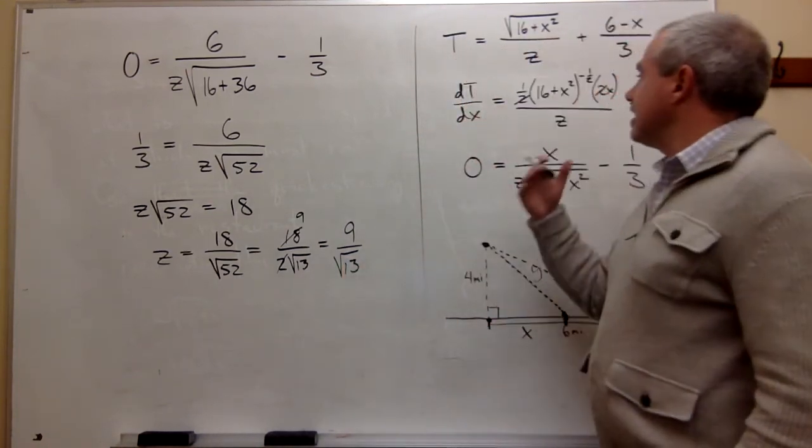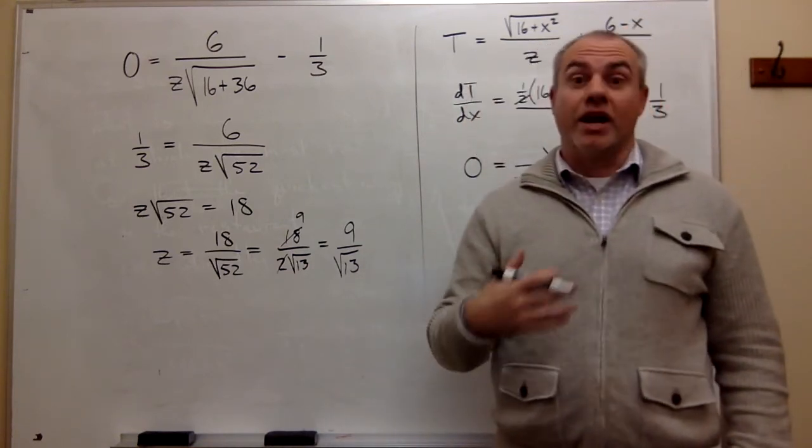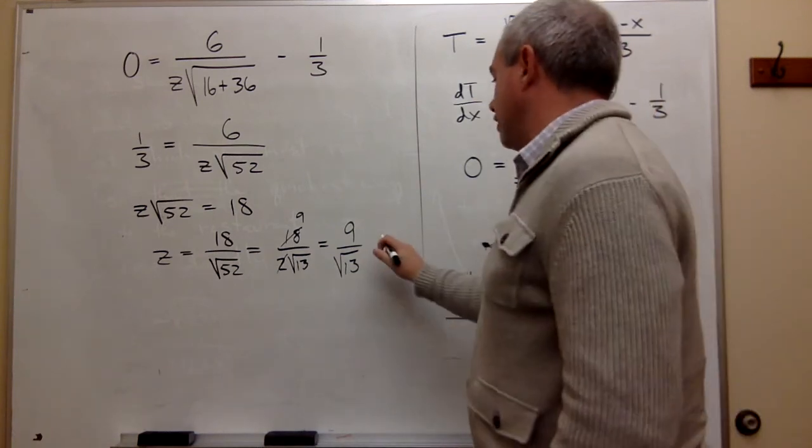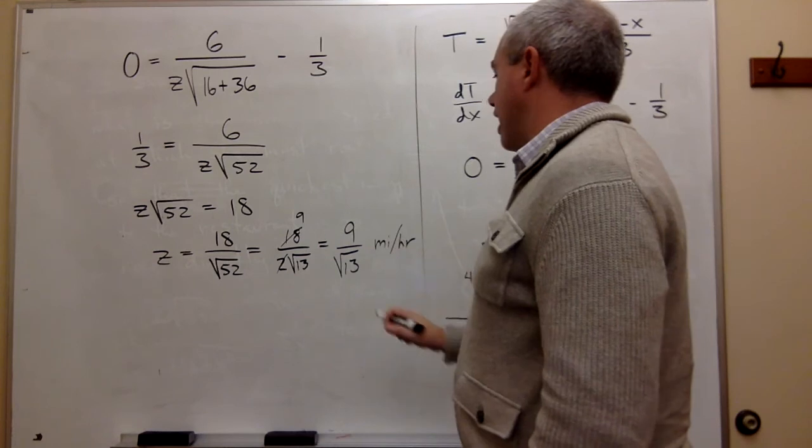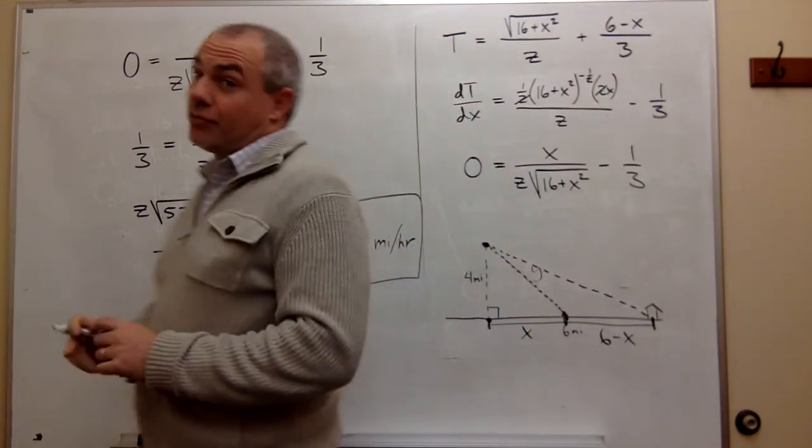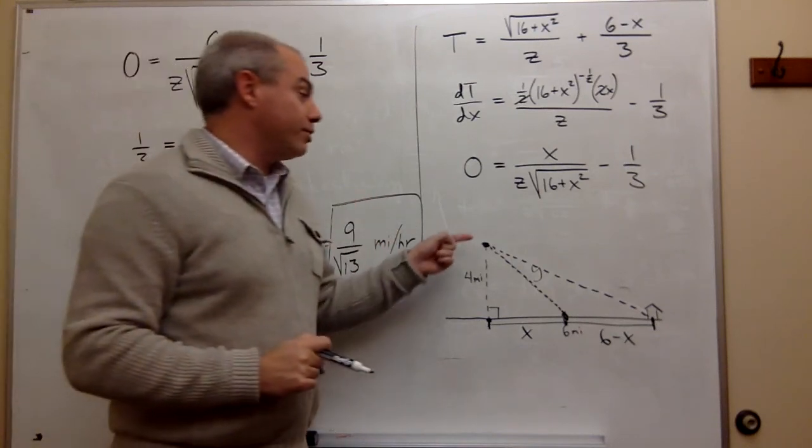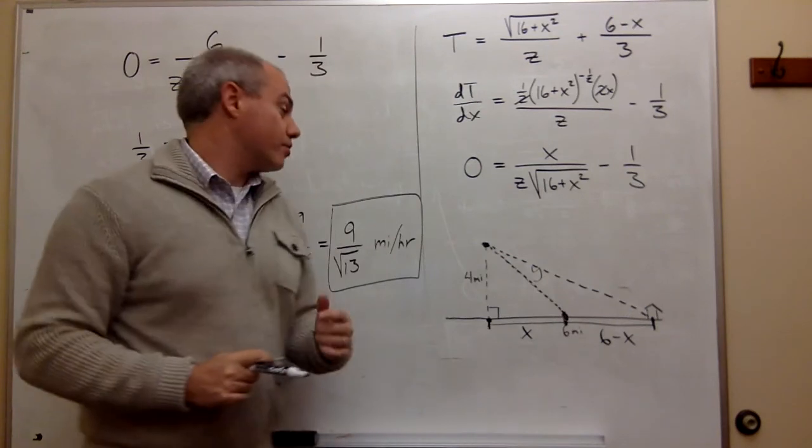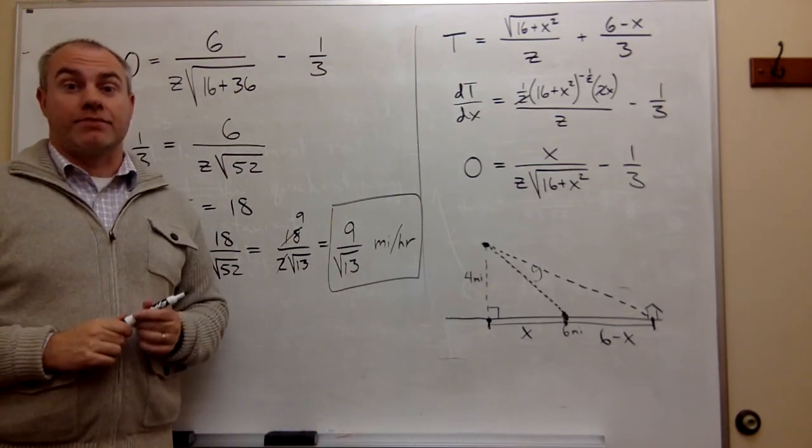And let's remember what z is that we're talking about. Z is a rate, a rate at which we are rowing the boat, and so this is miles per hour. So the minimum rate at which you would have to row this boat in order for the optimal thing to do is just row straight to the restaurant is 9 over the square root of 13 miles per hour.